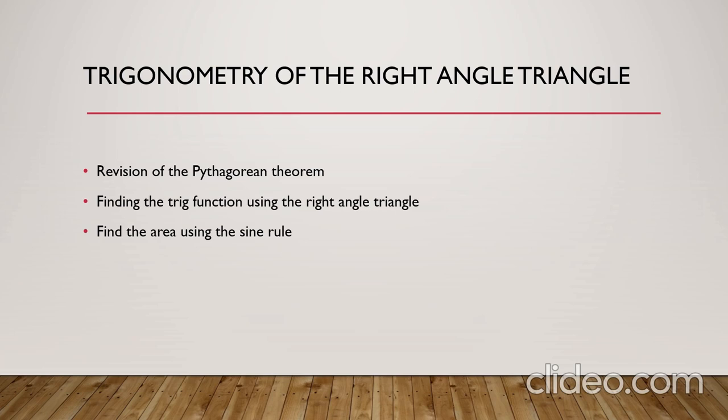Starting with making a quick revision on the Pythagorean theorem, we will know how to use the Pythagorean theorem in order to find any missing side in the right angle triangle. Knowing the three sides of a right angle triangle is very important in order to find the value of the six trigonometric functions that we will cover in this course.